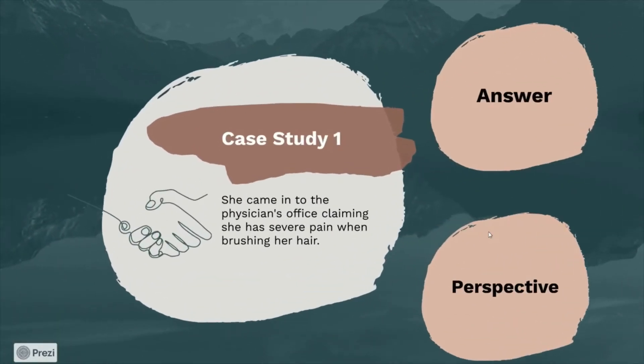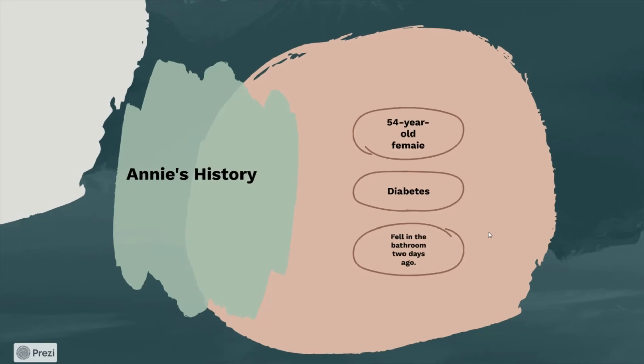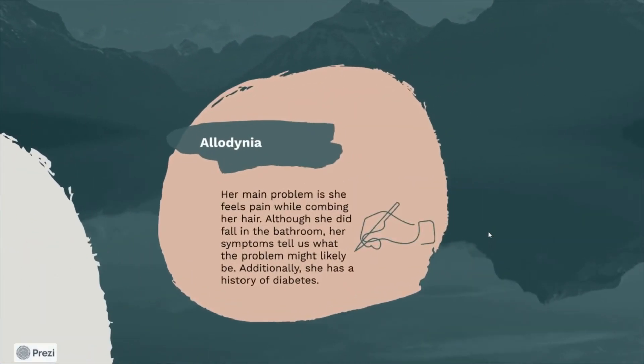Here are a couple of case studies. Case Study 1: Annie came into the physician's office claiming she has severe pain when brushing her hair. She is a 54-year-old female with diabetes who fell in the bathroom two days ago. The answer is that she has allodynia — her main problem is pain while combing her hair, and she also has a history of diabetes.